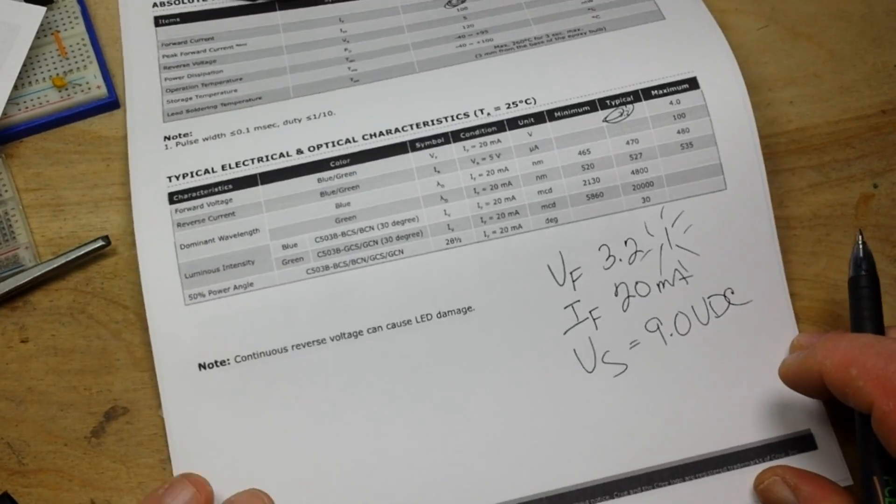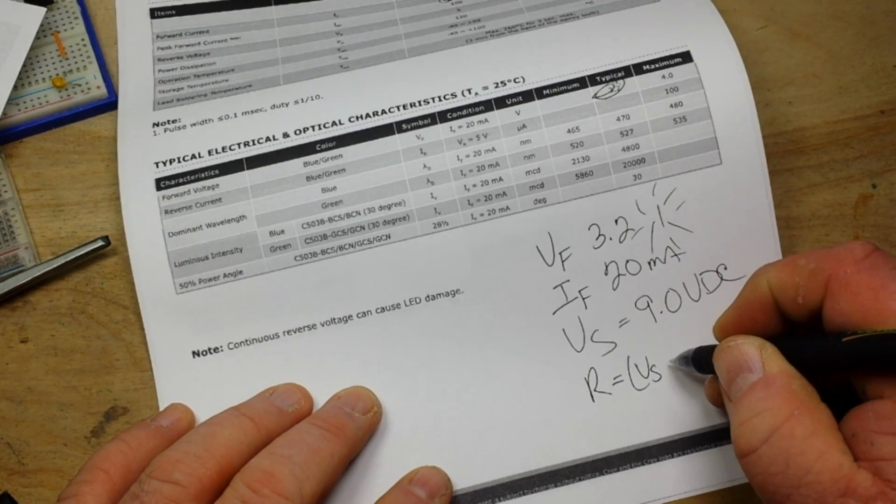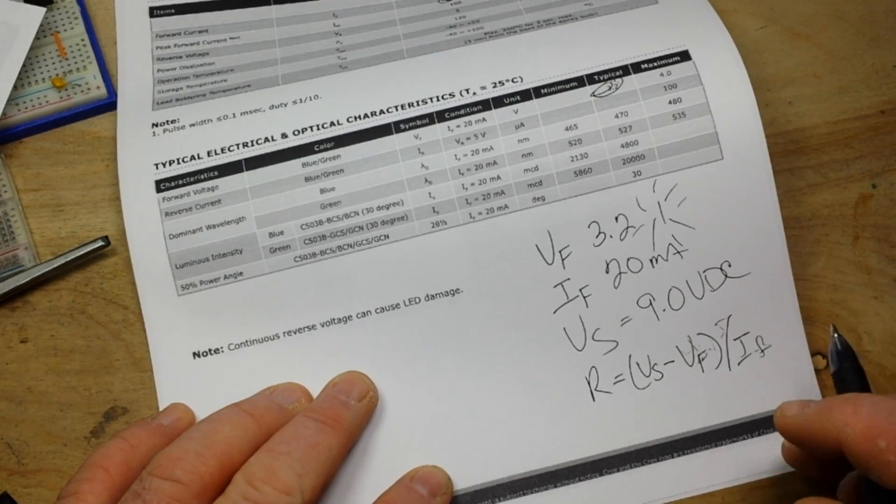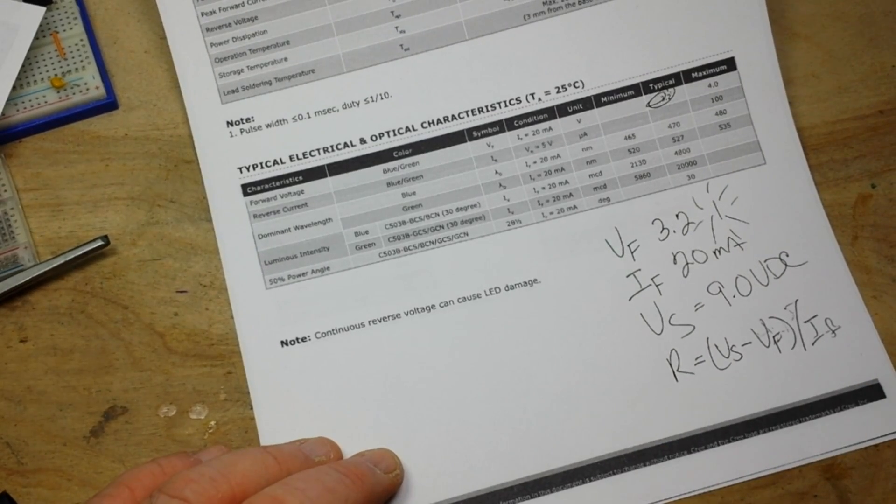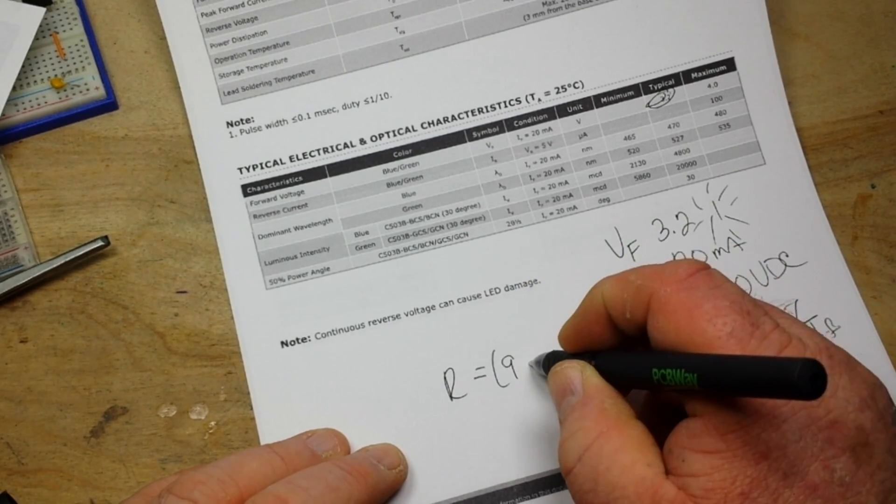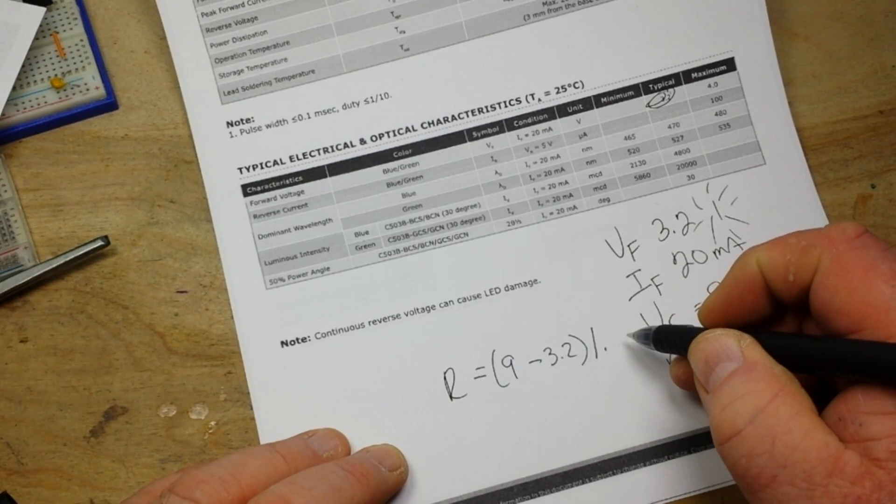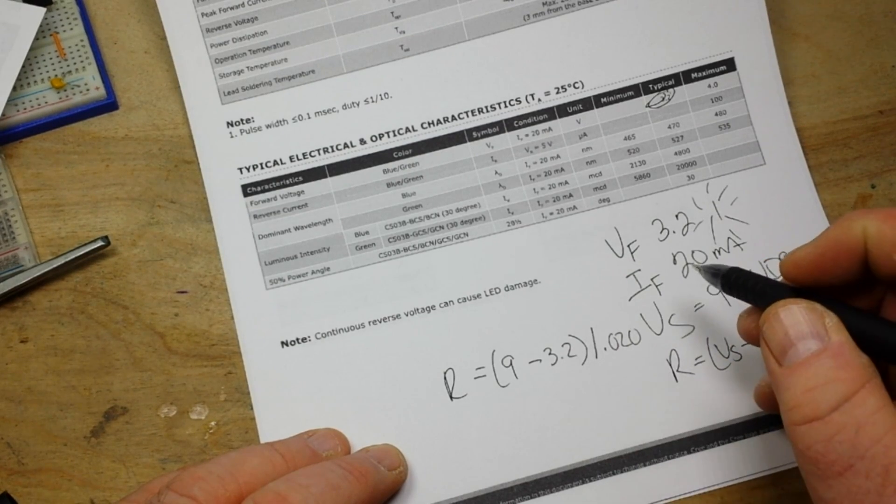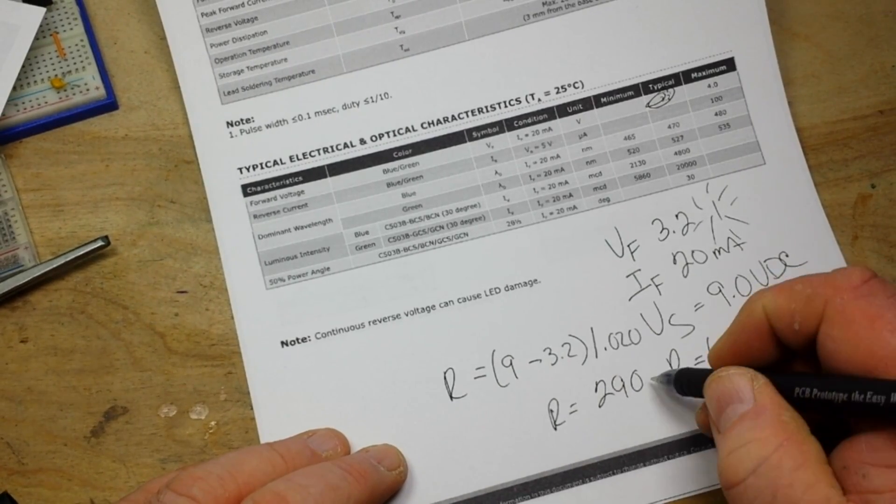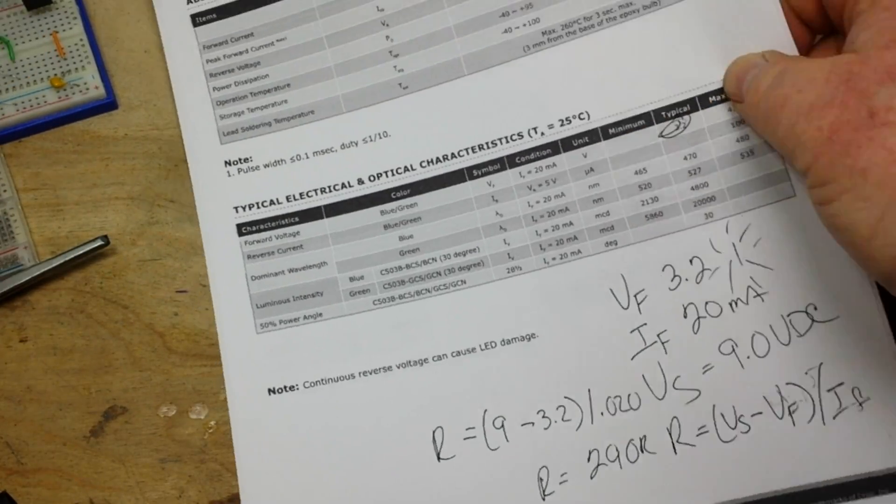Now, when you know all of that, you can simply apply the formula. R, which is what we need for our resistor, is equal to our supply voltage minus our forward voltage divided by our forward current. So, with the information that we have here, we can say that R is equal to 9 minus 3.2 divided by 0.02 amps, and that will give us R of 290 ohms.